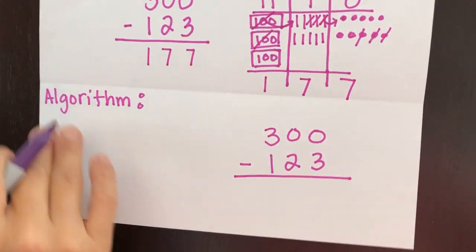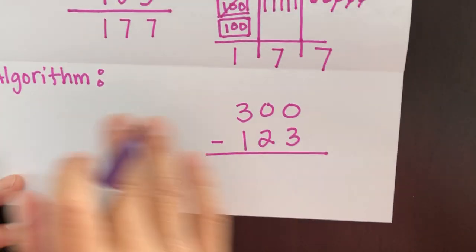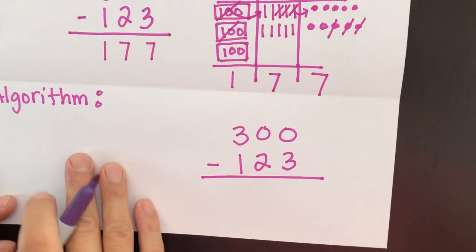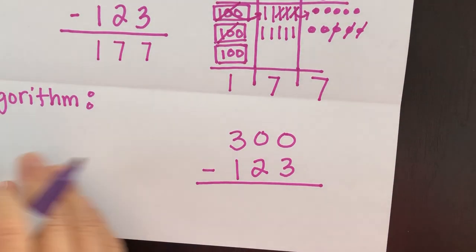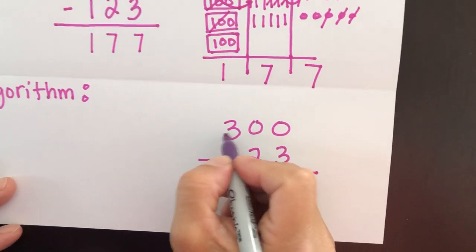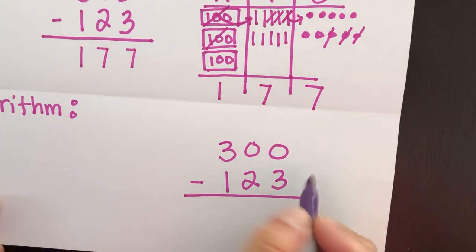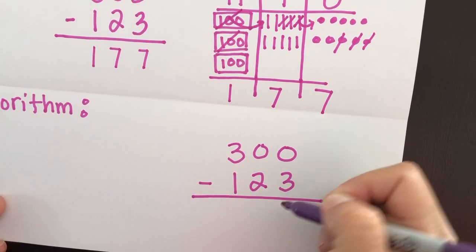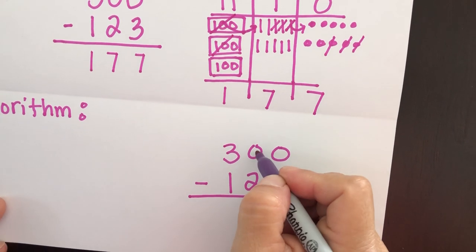So we're going to do the same thing now using the algorithm. And the algorithm is, it's really the same as the model. Except we're just not drawing a picture. We're using our numbers. So 300 minus 123. We know we cannot subtract three from zero. We cannot subtract two from zero.